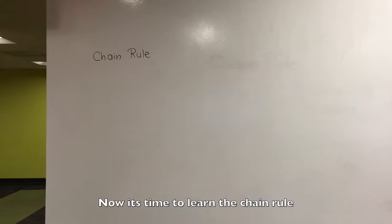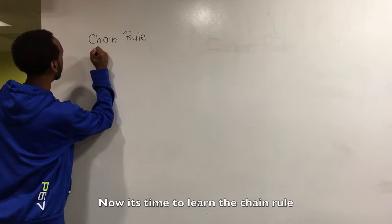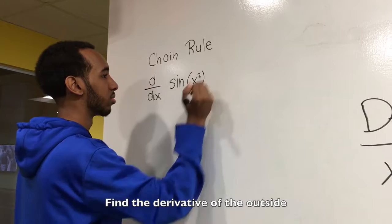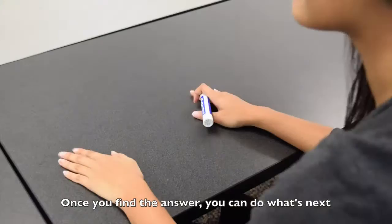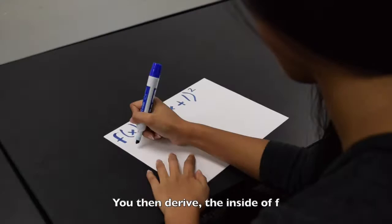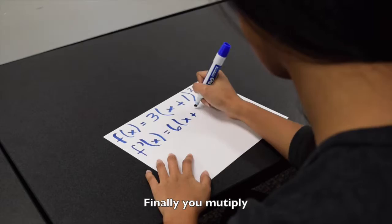Now it's time to learn the chain rule. Find the derivative of the outside, once you find the answer you can do what's next. You then derive the inside of f, finally you multiply.